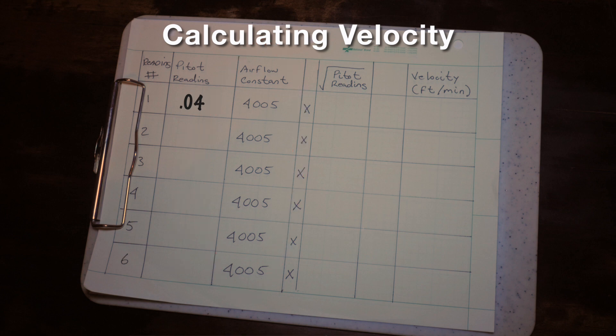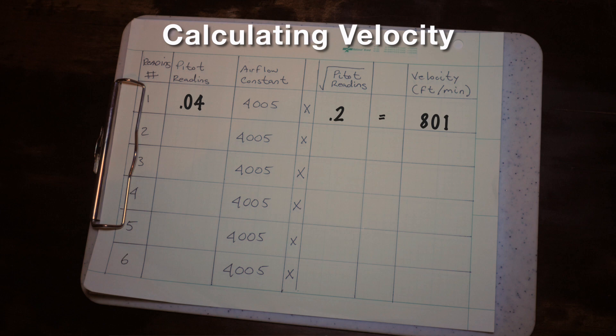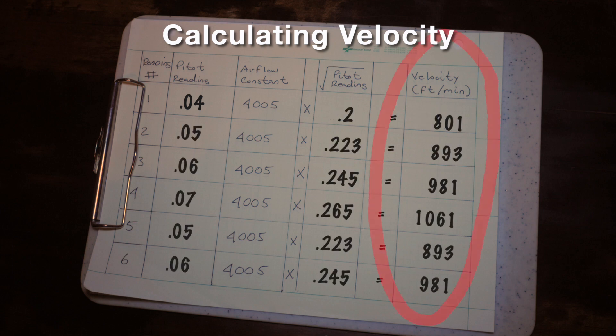In this example, the square root of a 0.04 pitot tube reading equals 0.2. Multiply 0.2 times the airflow constant of 4005 and the velocity is 801 feet per minute. You will see that you have a slightly different velocity reading for each point. This is normal and is why you take readings at multiple points.